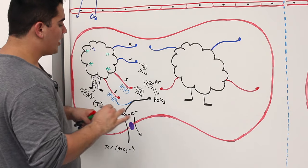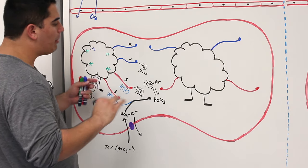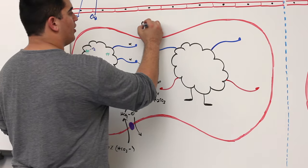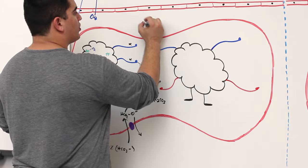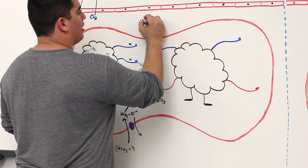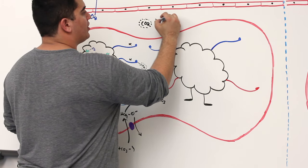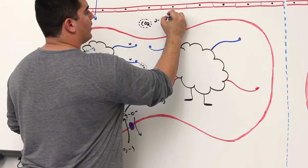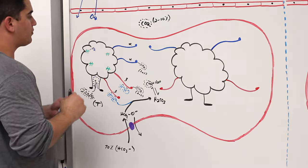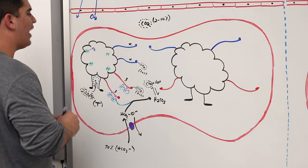The remaining about 2 to 10% of CO2 is dissolved in the actual blood plasma.